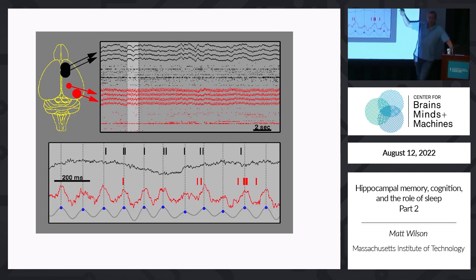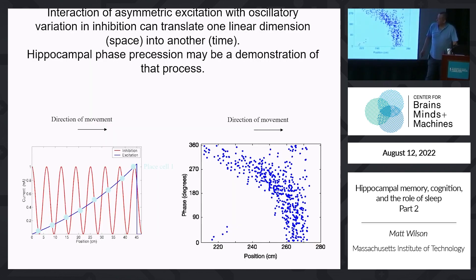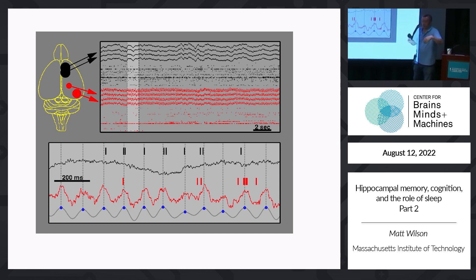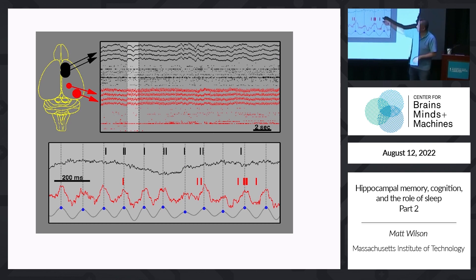Going back to the theta rhythm and theta phase precession — O'Keefe in 1990, along with Mike Recce, discovered the relationship between distance in a place field and spike phase. This figure shows simultaneous recording in two structures: in red is the hippocampus, and in black is the prefrontal cortex — specifically the limbic infralimbic and prelimbic prefrontal cortex, evolutionarily old and conserved, with direct connectivity from hippocampus to prefrontal cortex. What you see is that in the local field potential, you don't see theta rhythm in the prefrontal cortex, but if you look at the timing of spikes, prefrontal neurons are phase locked to the hippocampal theta rhythm.